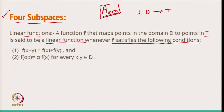The first condition is that f(x+y) should equal the sum of their images, that is f(x) + f(y). The second condition is that if I take a scalar multiple α times x, then f(αx) should equal α·f(x), for every x and y belonging to D. These types of functions are called linear functions.